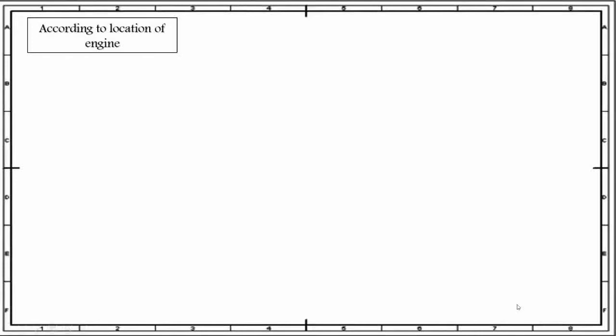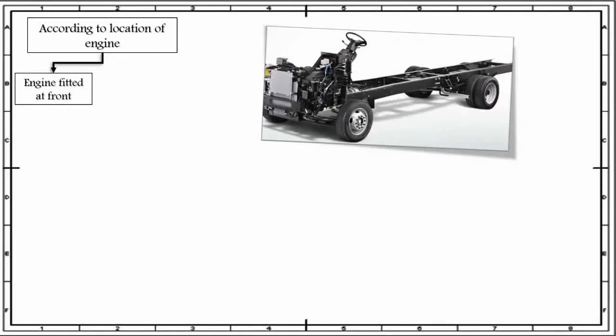Based on the location of engine, chassis can be further classified. Conventionally, in most vehicles, the engine is fitted at the front of the chassis. There are three options of drive available for engine fitted at front: first, front engine with rear wheel drive; second, front engine with front wheel drive; and third, engine fitted at the front in a crosswise manner with drive also provided to the front wheel. An example of engine fitted at front is shown in this figure.